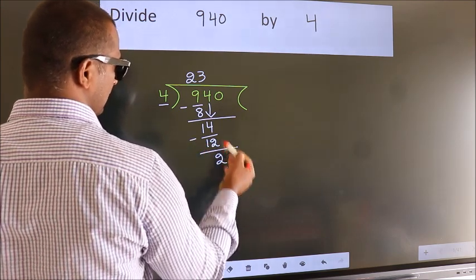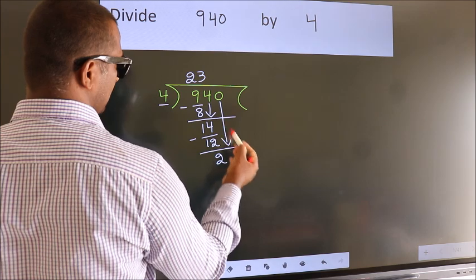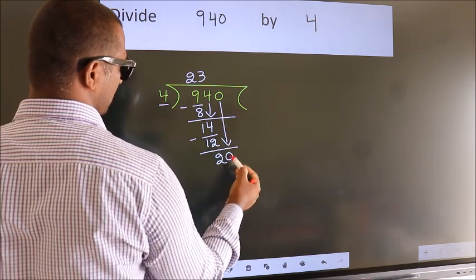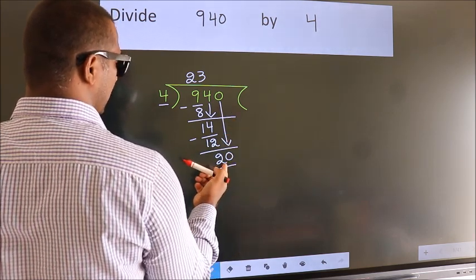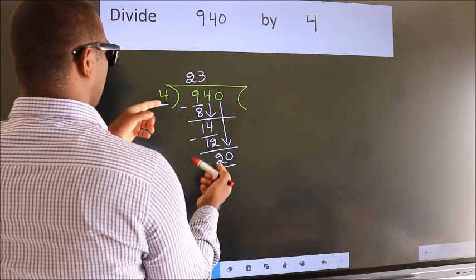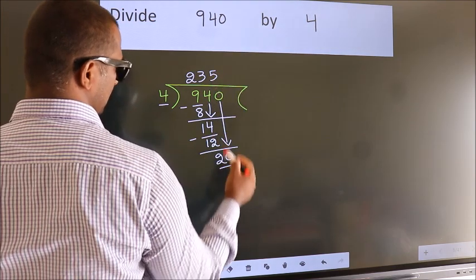After this, bring down the beside number. So, 0 down. So, 20. When do we get 20 in the 4 table? 4 fives, 20.